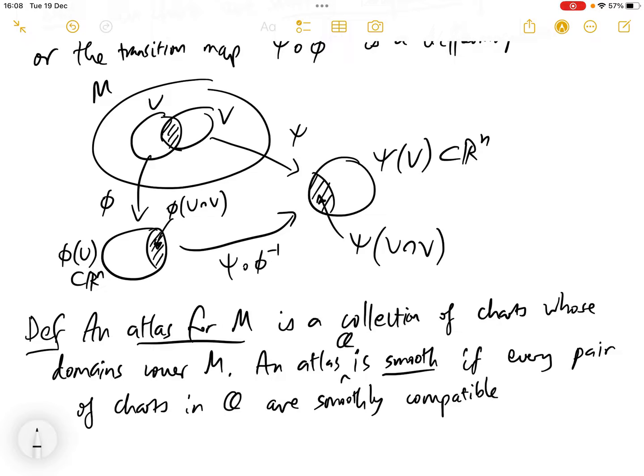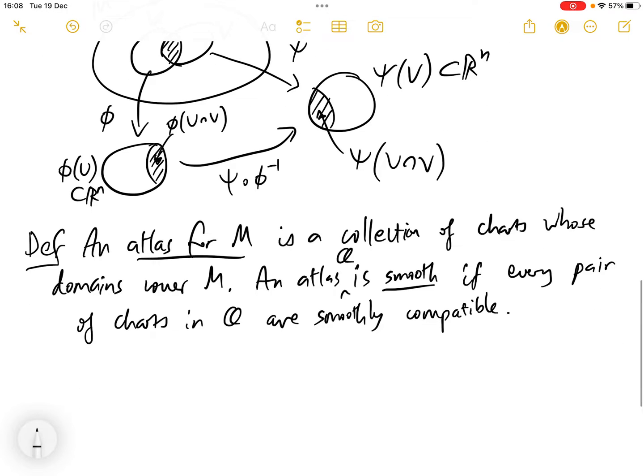And then lastly, so why is it not enough to consider lone smooth atlases? What we actually want to consider is maximal smooth atlases. So a smooth atlas A is maximal if it's not properly contained in any larger smooth atlas.